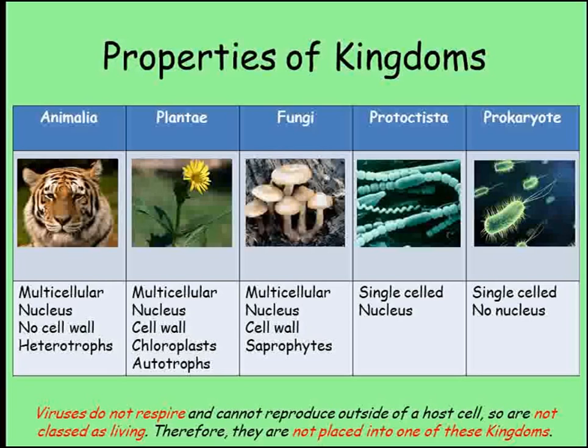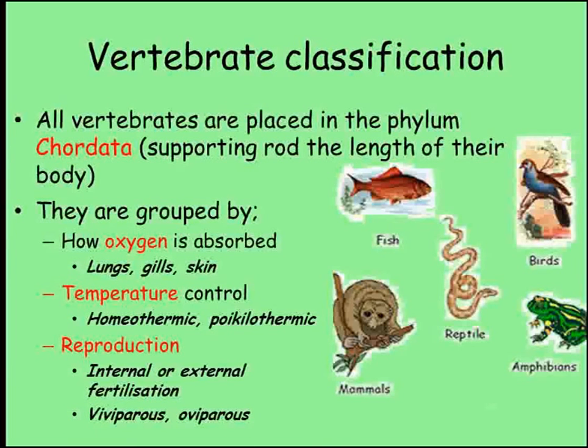Viruses are much simpler than any of these groups of organisms. They don't require a source of energy because they don't respire, and they are only able to reproduce when inside a host cell. For these reasons, scientists do not regard viruses as living, so they are not placed into one of the five kingdoms. Sometimes it can be difficult to place a species within a particular group because it has features of more than one group.